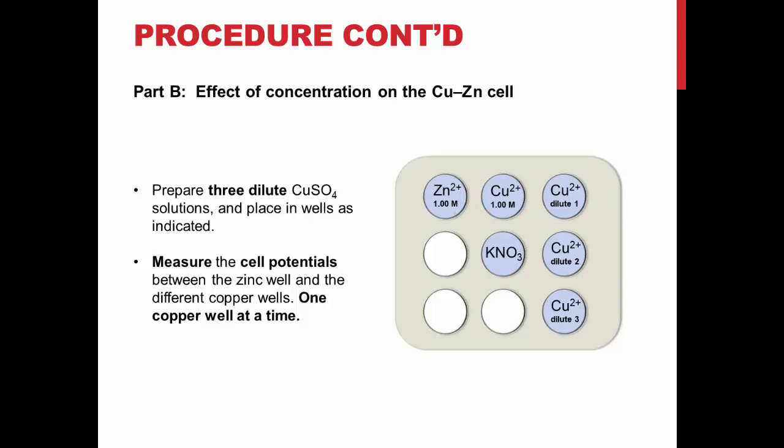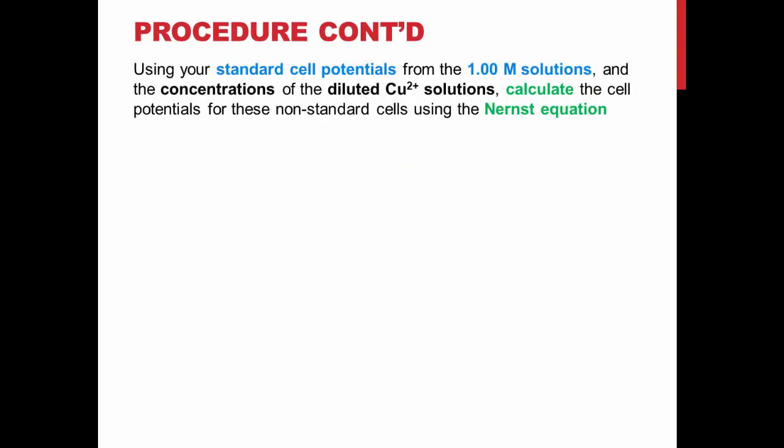In part A, the potentials you measure are at concentrations of 1.0 molar. Thinking of the Nernst equation, this means that the cell potential is equal to the standard cell potential. Using these values, you can calculate the non-standard potentials for the diluted copper solutions in part B, given that you know the concentrations of all the solutions you used. Compare the values you calculate to the ones you measure over the course of the experiment.